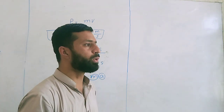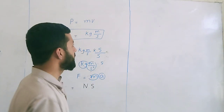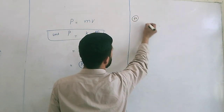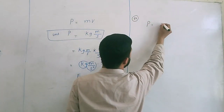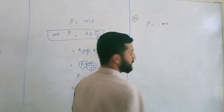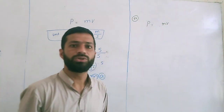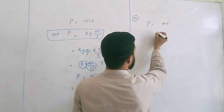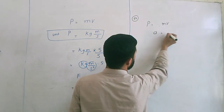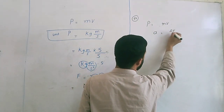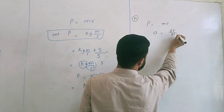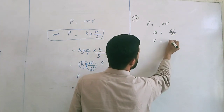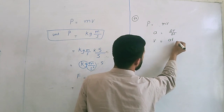We can also prove it by another method. We can prove this by the equation P is equal to MV. If we write that acceleration is equal to the rate of change of velocity, then velocity will become V is equal to AT.